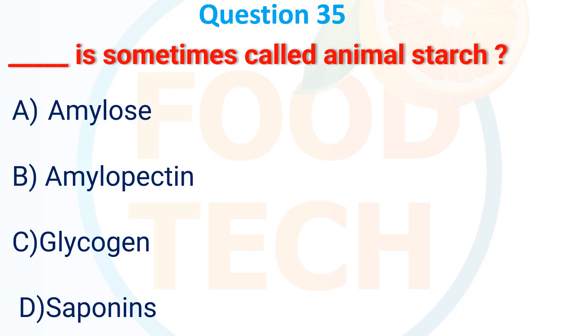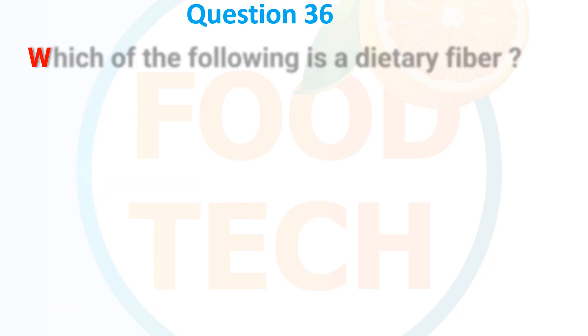Question 35: Which is sometimes called animal starch? A. Amylose, B. Amylopectin, C. Glycogen, D. Saponin. The answer is C. Glycogen.